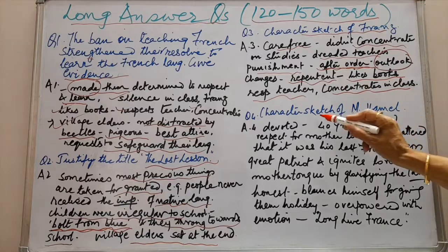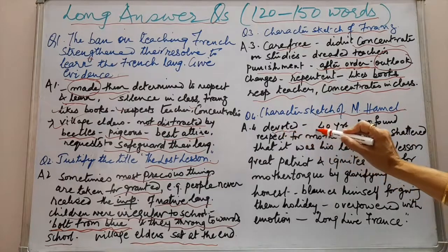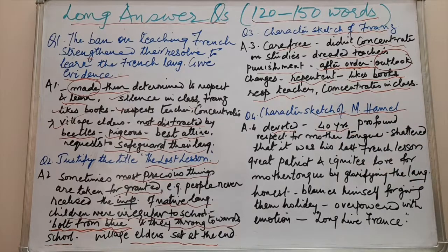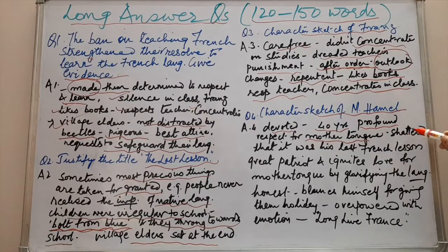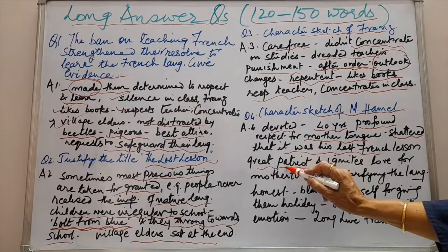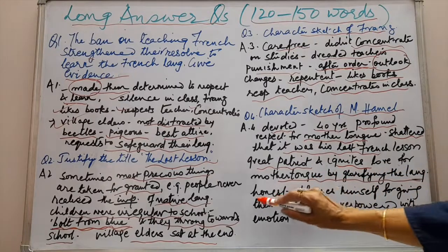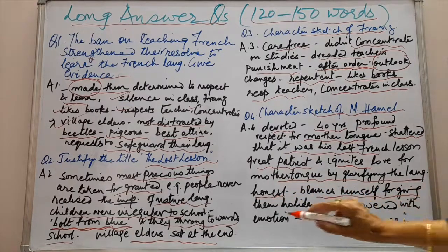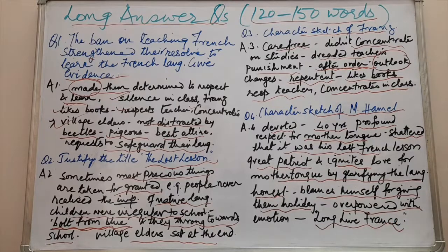Another important question is the character sketch of M. Hamel, who is the central character of the story. He is very devoted — for the last 40 years he has been teaching French to the French people and has profound respect for the mother tongue. He becomes shattered when he hears the news that it was his last French lesson. He is a great patriot as he succeeds in igniting love for the mother tongue by glorifying the language. He is also very honest — he blames himself for giving them holidays when he wanted to go fishing. In the end he is overpowered with emotion and writes 'Long live France.'